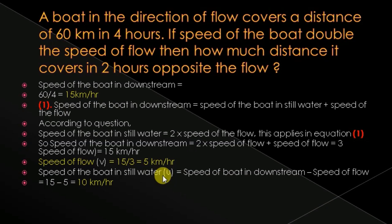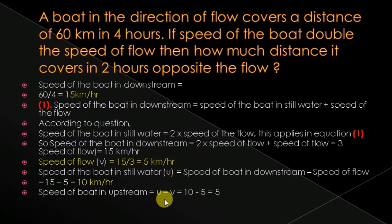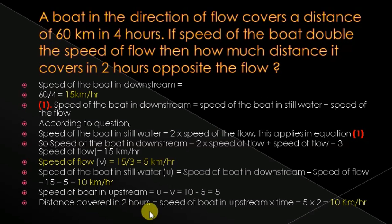Speed of boat in still water u = downstream speed − speed of flow = 15 − 5 = 10 km/hr. Speed upstream = u − v = 10 − 5 = 5 km/hr. Distance covered in 2 hours = speed upstream × time = 5 × 2 = 10 km. Please write it on paper and solve it — only then you can fully understand this question.